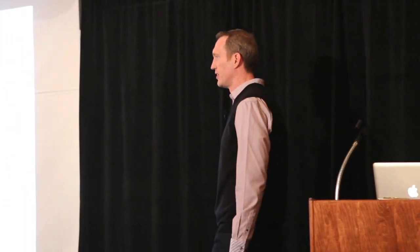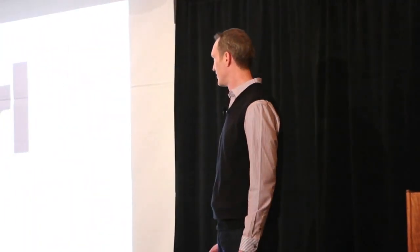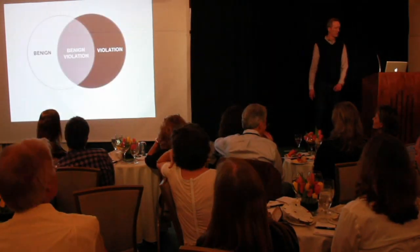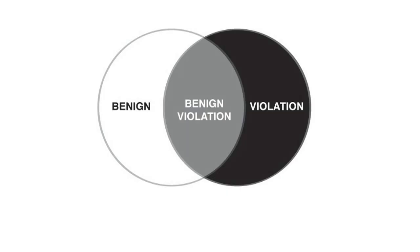Now, E.B. White has a warning for me. E.B. White said that analyzing humor is like dissecting a frog. Few people are interested, and the frog dies. Nonetheless, here I am. So, Caleb Warren and I—Caleb was a graduate student at the time—have crafted a theory of humor that we call the benign violation theory.